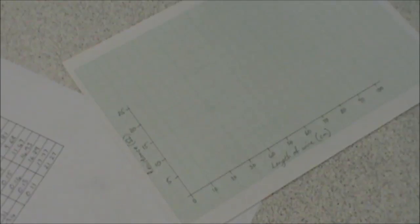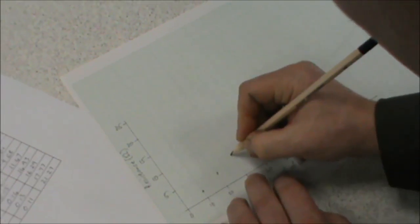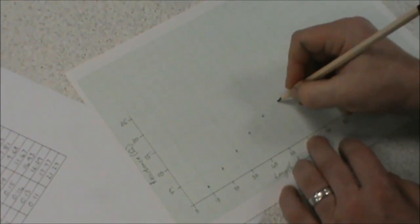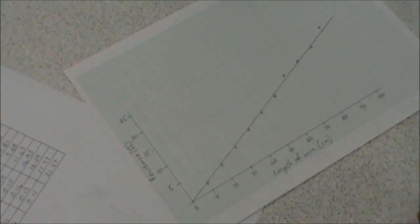Don't forget to label your axes and include the units. And now we can plot our points. Now we can add a line of best fit. If we look at this, it looks pretty much like a straight line. And there we have our completed graph.